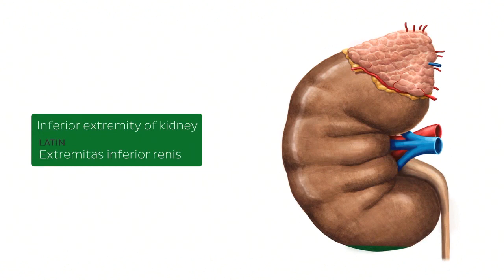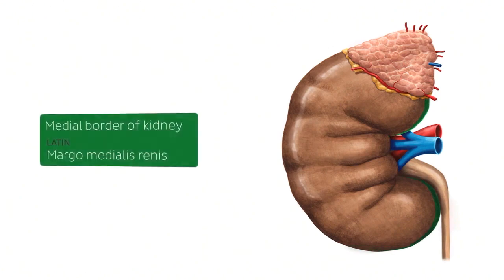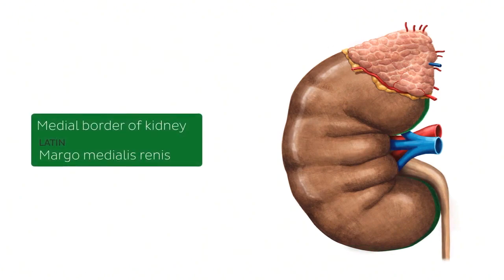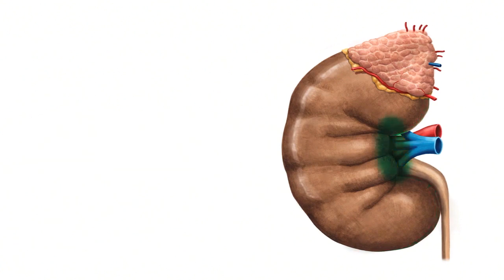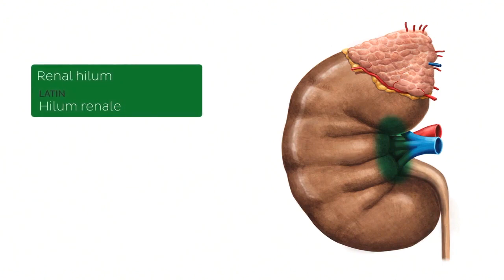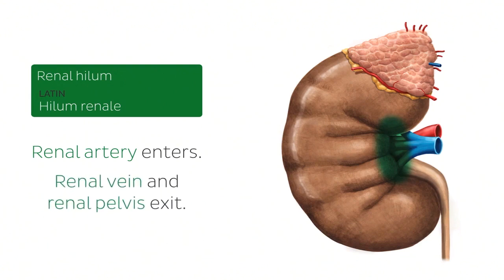If we had a lateral border, we should have a medial border as well. The medial border of the kidneys is concave and is where the hilum of the kidneys is located. The renal hilum is found on the concave medial margin of the kidney. It is here that the renal artery enters — via five different segments — and it is also the point at which the renal vein and the renal pelvis exit the kidneys. You can see all these structures here: the renal artery, the renal vein, and the renal pelvis coming out of the hilum.